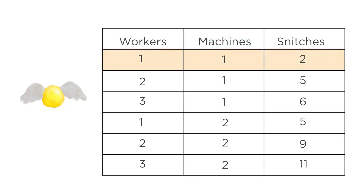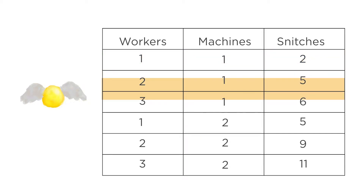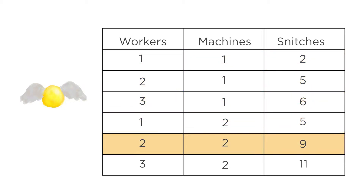With one worker and one machine, we can make two snitches. And you can see that as we add more workers and more machines, the number of snitches we can make increases. This should look very familiar — just like the utility tables we've seen before, but now with production inputs. Indeed, many of the tricks we learned when studying utility maximization will come in handy here as well.